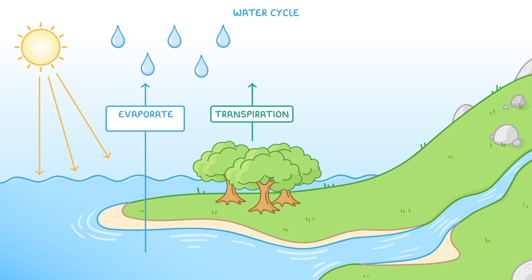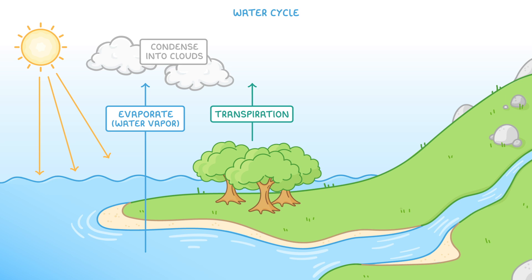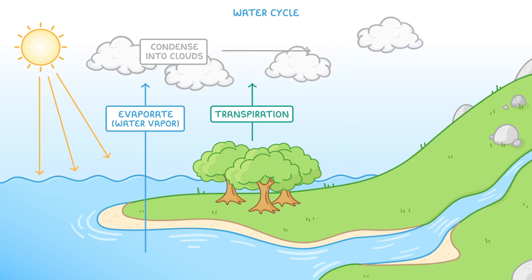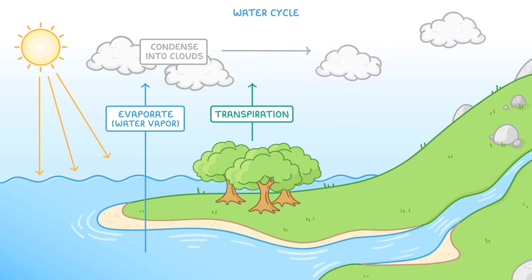So now we've basically taken lots of liquid water from the earth's surface and evaporated it into water vapor in the air. As all this water vapor accumulates in the sky, it will start to condense into clouds, which can then be blown from one region to another.